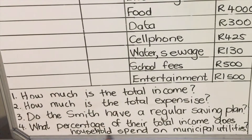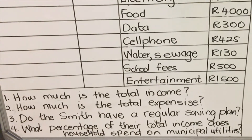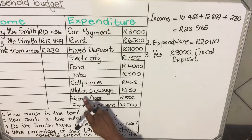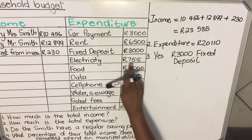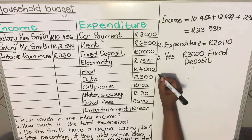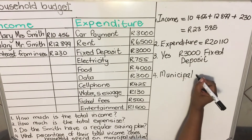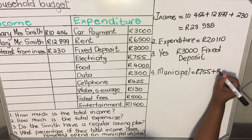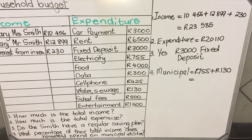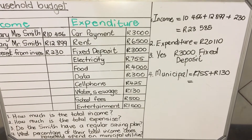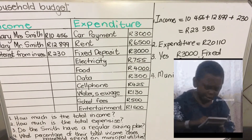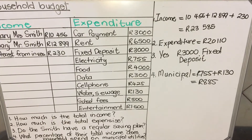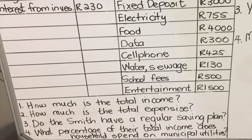The fourth question: what percentage of their total income does the household spend on municipal utilities? From the municipality they get water, sewage, and electricity. The total amount they pay to the municipality is 755 for lights plus 130 for water and sewage, which equals 885.